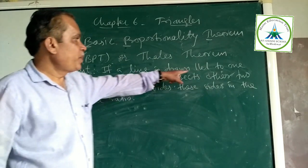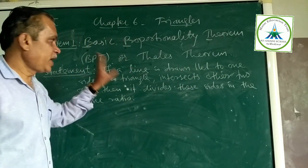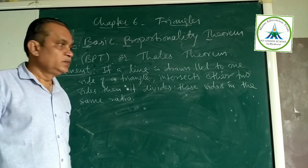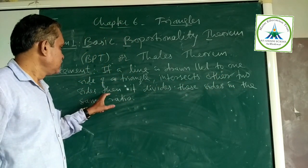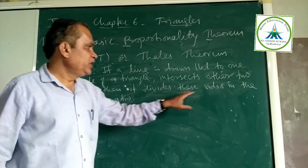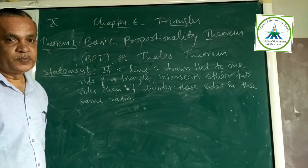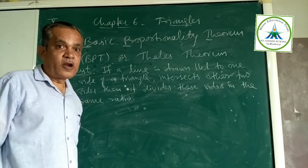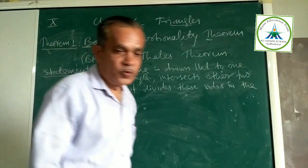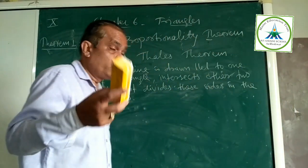If a line is drawn parallel to one side of triangle, intersects other two sides, then it divides these sides in the same ratio. By reading you should be able to draw a diagram. Now see, I am reading and drawing.